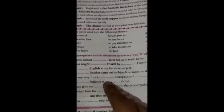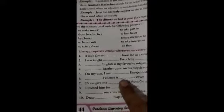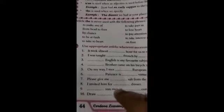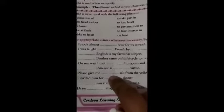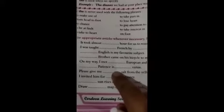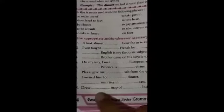On my way I met a European and an American। Patience is a virtue — a virtue। Please give me salt — articles के view से X। I invite him for the dinner। The sun rises in the east — sun एक ही है specific है इसलिए the sun, और east भी एक दिशा है इसलिए the east।